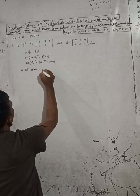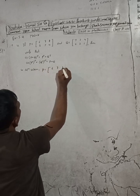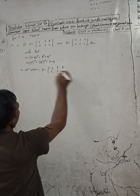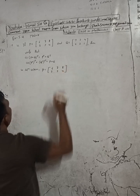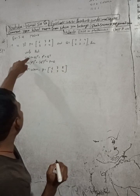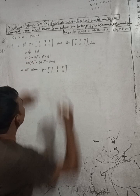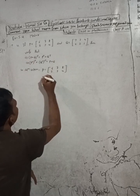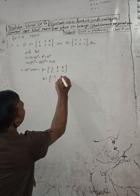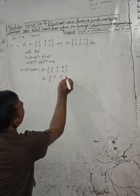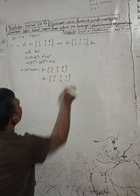P is equal to — given — [6 7 8 / 2 3 4]. And Q is also given here: Q is equal to [3 2 4 / 6 2 1].